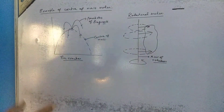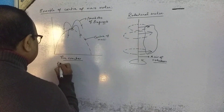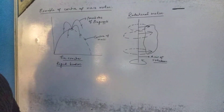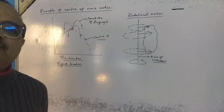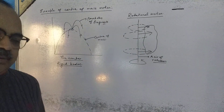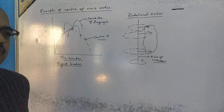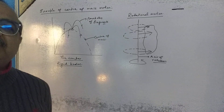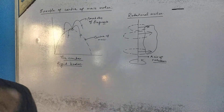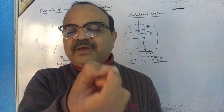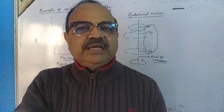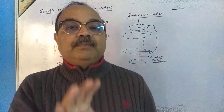My next topic is rigid bodies. A rigid body is one whose shape and size cannot be changed by the application of force — it cannot be deformed. A rigid body is supposed to be made up of a large number of mass points, or particles.